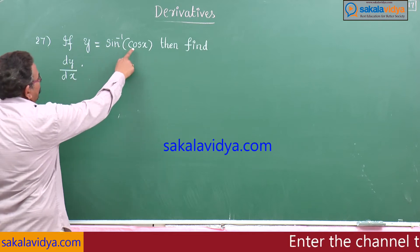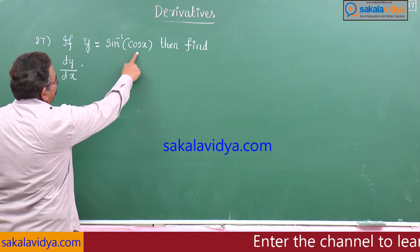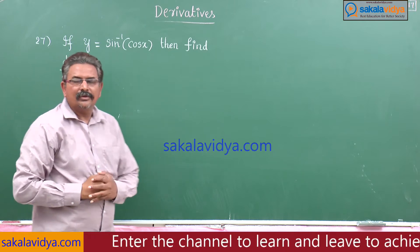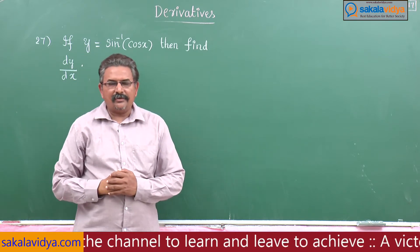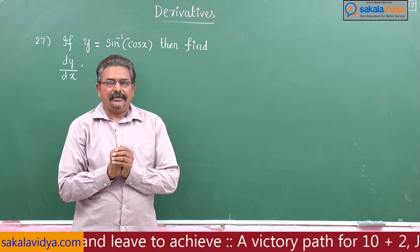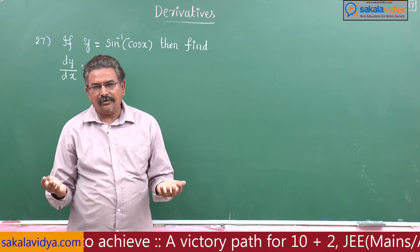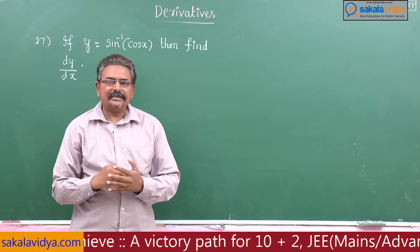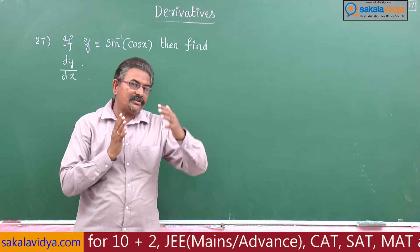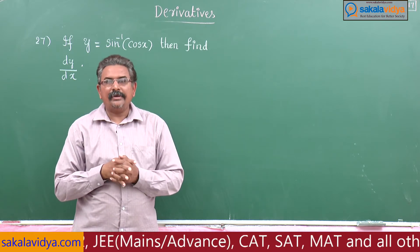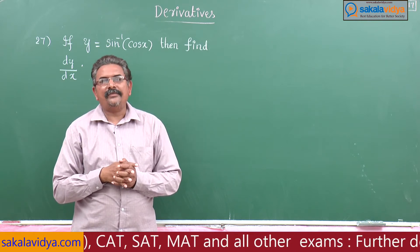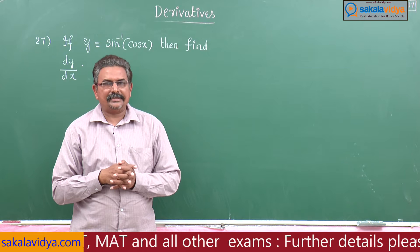If y is equal to sin inverse of cos x, then find dy by dx. This problem can be solved in a very simple manner. We have two methods — directly or otherwise, we can find the value of sin inverse cos x. In inverse trigonometric functions, cos x can be written in the form of sin of 90 degrees minus x.